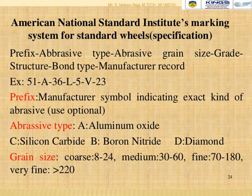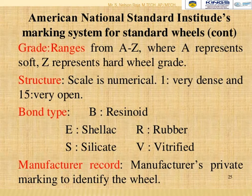The prefix is the manufacturer symbol indicating the exact kind of abrasive. Abrasive types include aluminium oxide, silicon carbide, boron nitride, and diamond. Grain size ranges: coarse 8–24, medium 30–60, fine 70–180, very fine 220 and above. Grade ranges from A (soft) to Z (hard). Structure is numeric from very dense to very open. Bond types include resinoid, vitrified, shellac, rubber, and silicate.